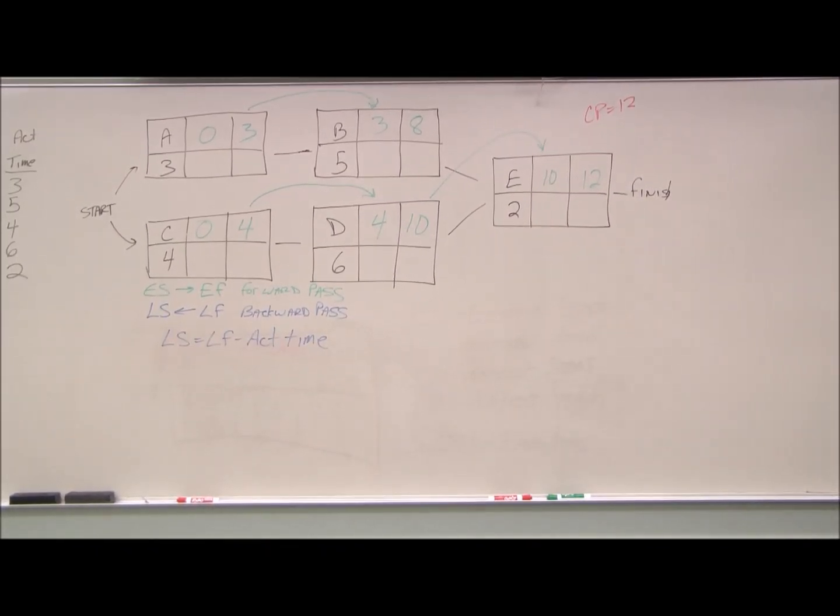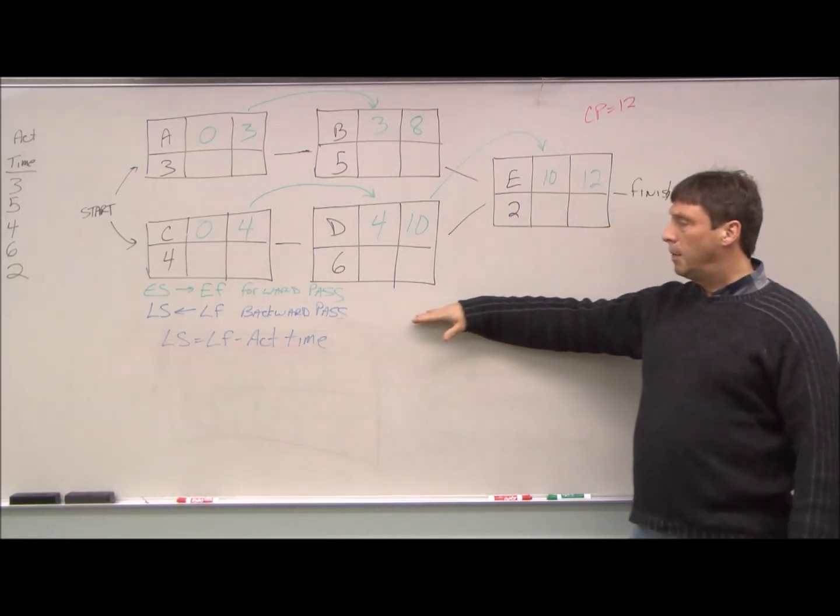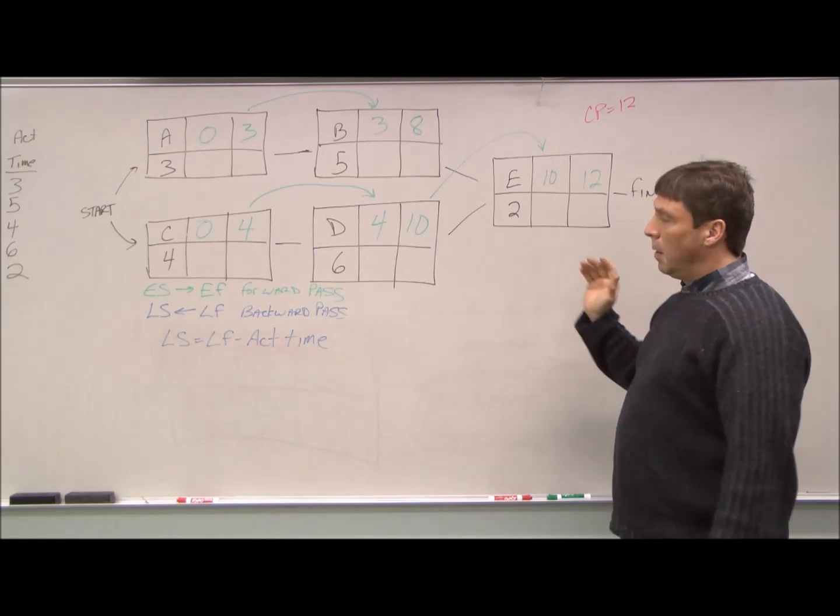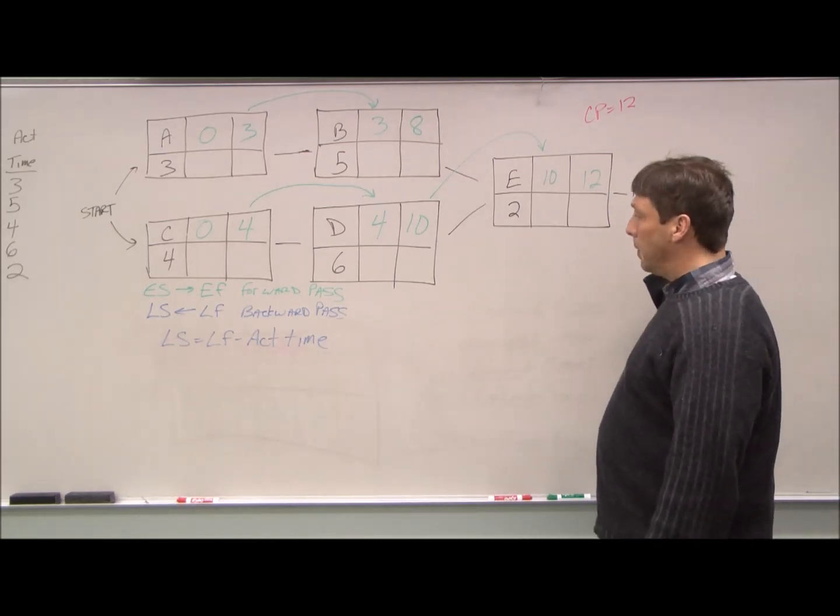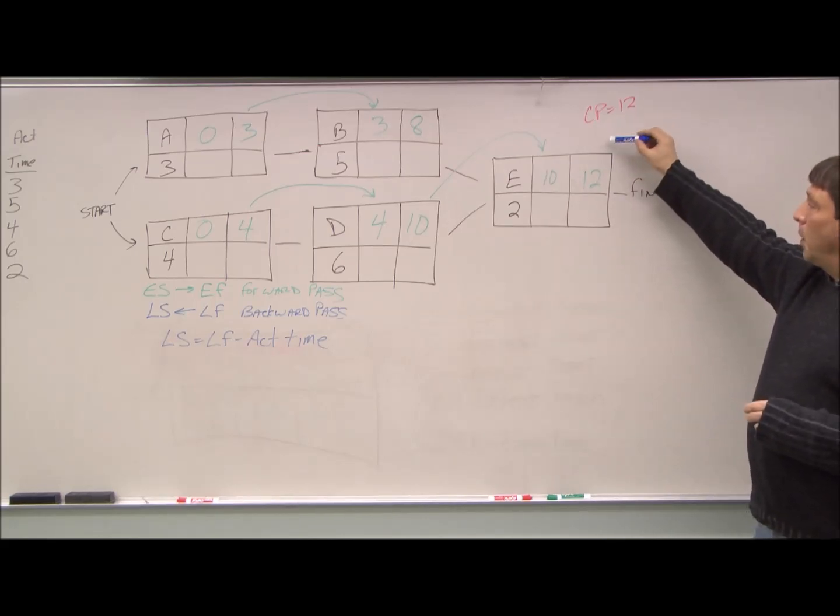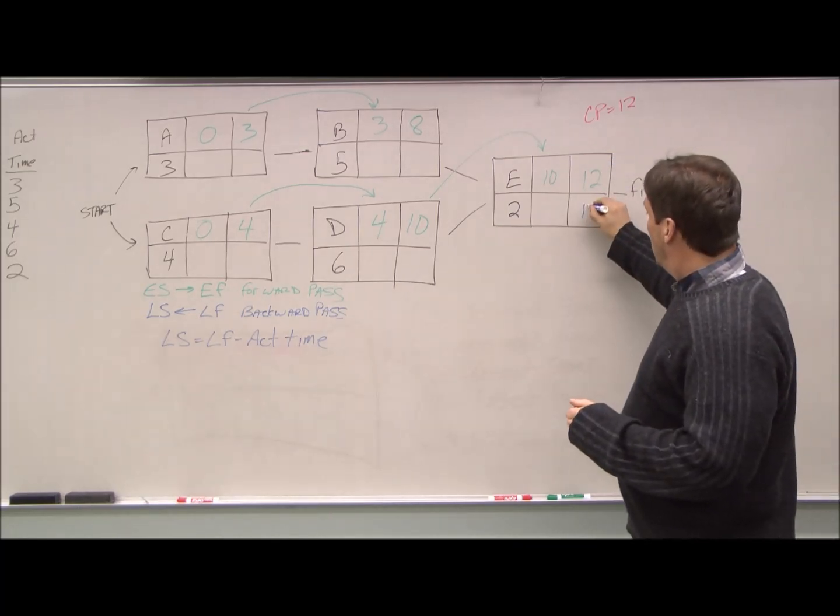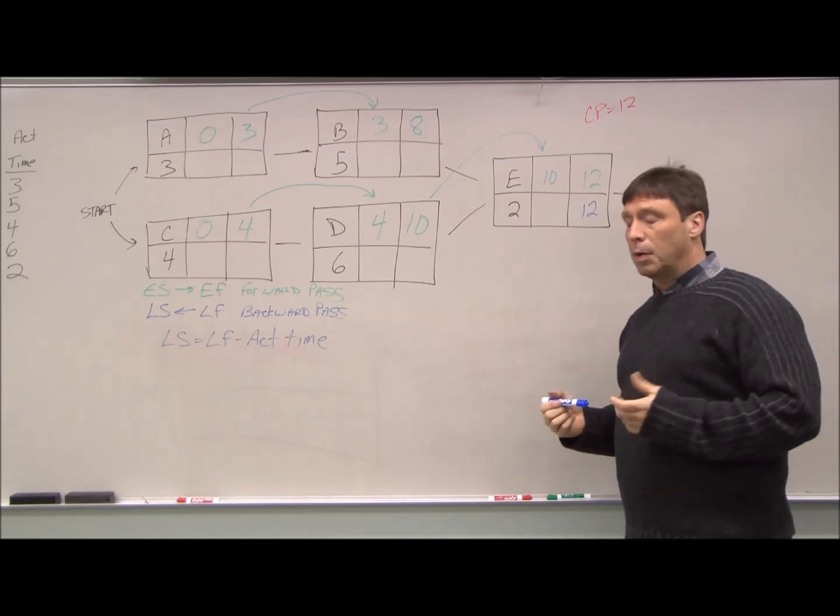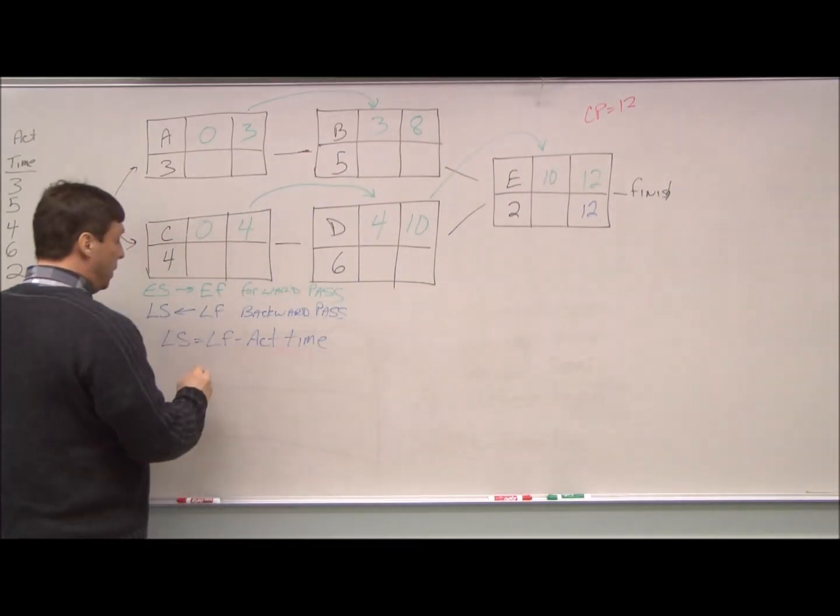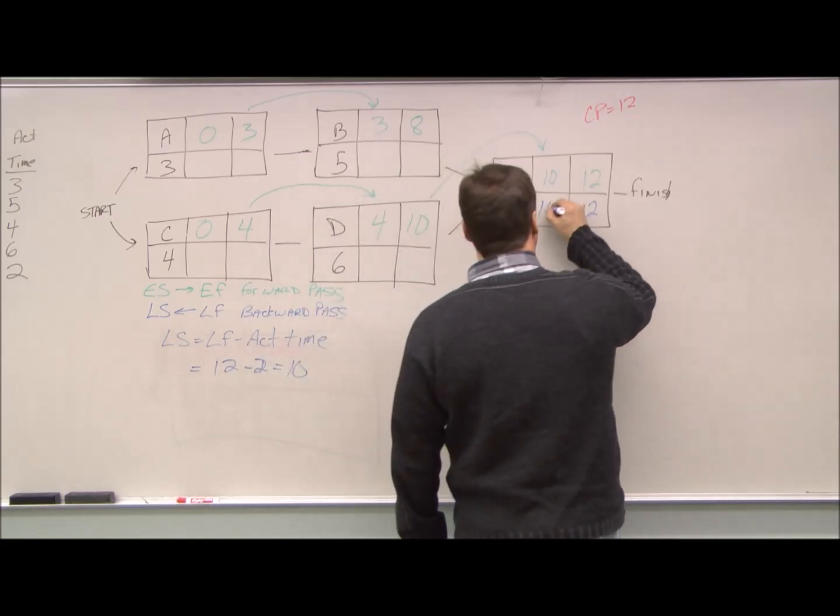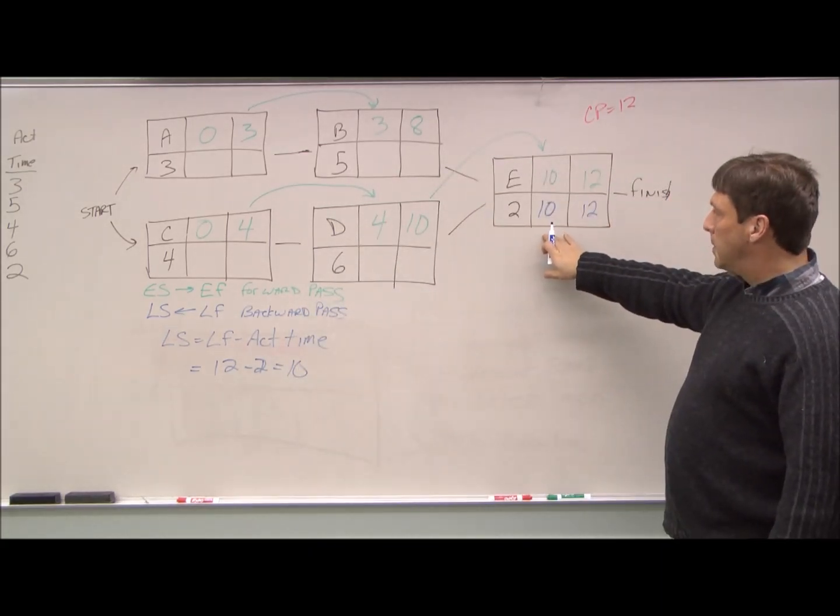All right. Now that we have the earliest start and earliest finish, let's work on the latest start and latest finish. What we did with the earliest start and earliest finish is we did a forward pass. We worked from left to right. In other words, we stop at the end here. All right. We know our critical path is twelve. We really don't need to calculate it because we've calculated it here, too. So we know we have to finish up. Our latest finish can be our critical path time if we want the project to remain on time. So we have twelve minus two equals ten. So right here we know that our latest start is week ten.